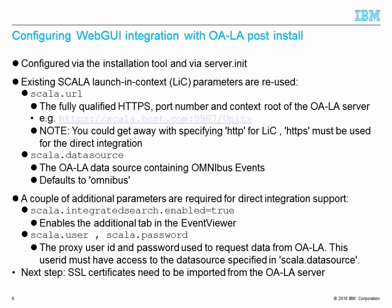In addition to configuring the integration in the install panel, you can also configure it directly by modifying the web GUI server.init configuration file. We reuse existing scala launching context configuration parameters and add an additional couple of parameters for the direct integration. If you have configured launching context you'll be familiar with these parameters. scala.url is a fully qualified HTTPS hostname, port number and context root of the LA server — for example: https://scala.host.com:9987/unity.